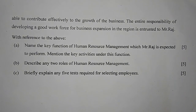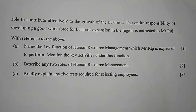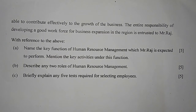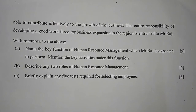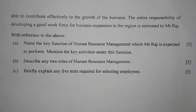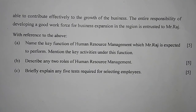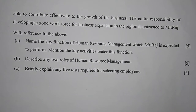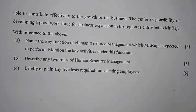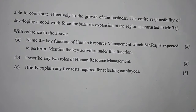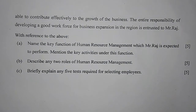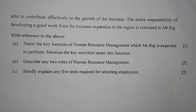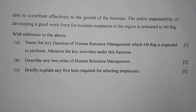This is the second case study, question number ten. Number A: name the key function of human resource management which Mr. Raj is expected to perform and mention the key activities under this function. The function name is the procurement function. It is concerned with securing and employing the right kind and proper number of people required to accomplish the organizational objective — that is the expansion in this case study. The key activities under this function are human resource planning, recruitment, selection, placement, and job analysis.